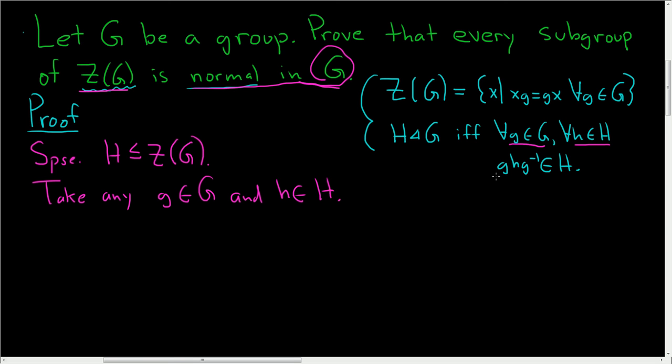And now we have to show that ghg inverse is in capital H. So then, let's just write it down and see what happens: ghg inverse. So we have to somehow show that this is in big H. But we know something. We know that little h is in capital H, but capital H is contained in the center of G. That means little h commutes with every element of G. In particular, it commutes with g inverse.